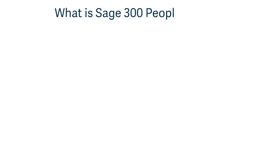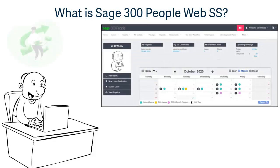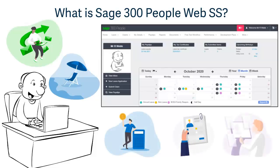What is Sage 300 People Web SS? It is an online system allowing employees to submit leave, personal detail changes, and apply for claims electronically. It also allows managers to apply for any of these items on behalf of an employee, should they not have access to a computer. The Sage 300 People Web SS system cuts out the paperwork for companies, making it less time-consuming for both the company and employees.